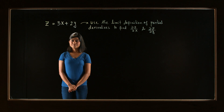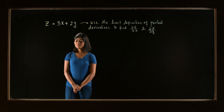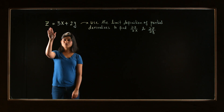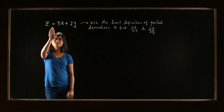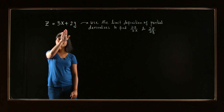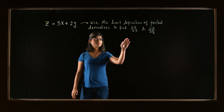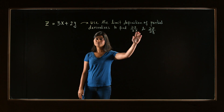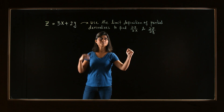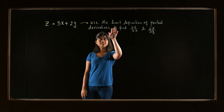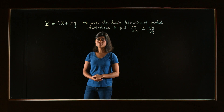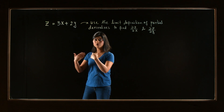Hi, I'm Dr. Papiya Bhattacharjee. In this problem, we have the function of two variables, z is equal to 3x plus 2y. We have to compute the first partial derivatives of this function, but using the limit definition, not directly.